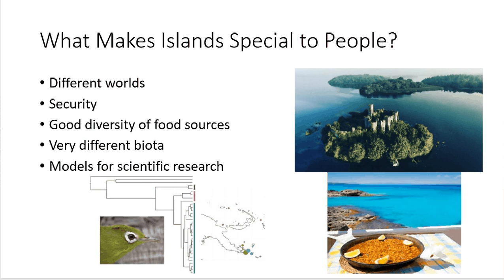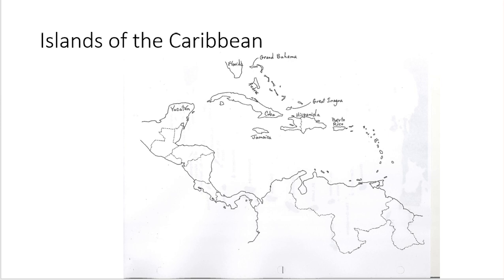These are some of the things we are going to consider and cover in the Island Biogeography course. Let me run through the Caribbean quickly — you've been learning about the different islands in the Caribbean since primary and high school. We're going to be looking at some of these patterns and why they exist, and how they influence the different types of plants and animals you get on these islands.